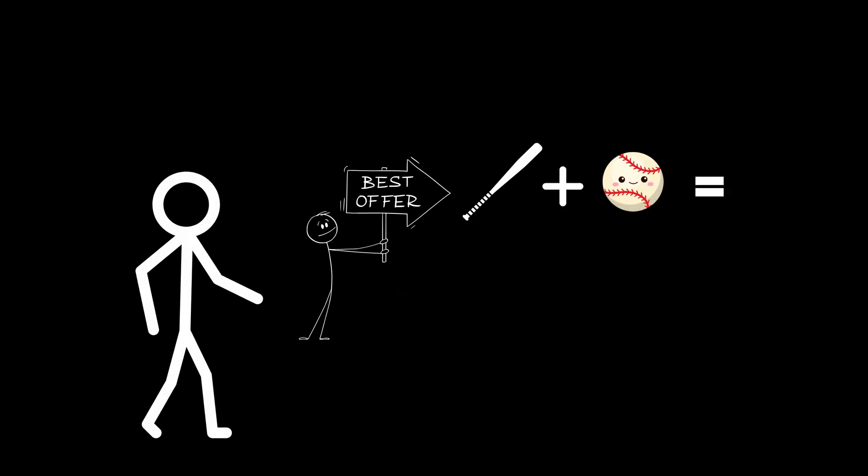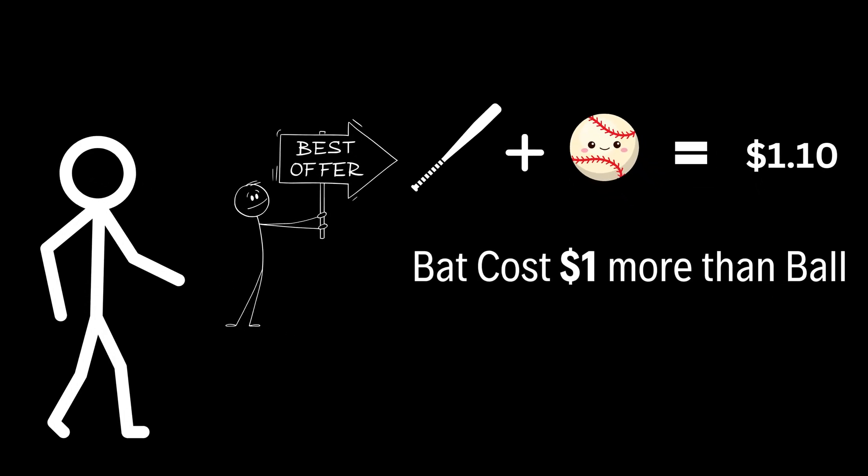Imagine you're at a store. A bat and a ball cost $1.10 in total. The bat costs $1 more than the ball. How much does the ball cost?